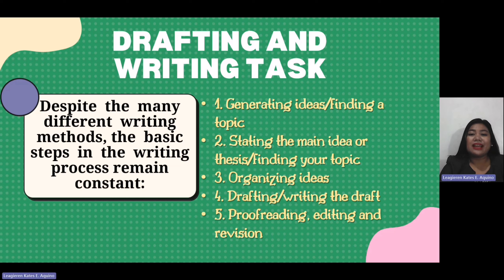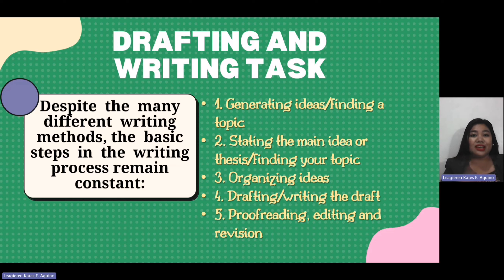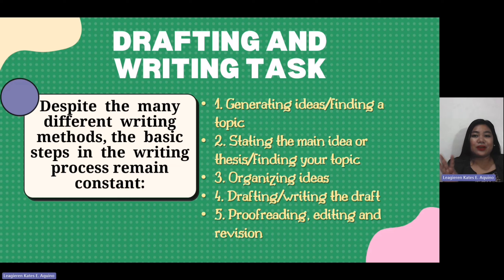Despite the many different writing methods, there are basic steps in the writing process that remain constant. Here are the following: First, generating ideas or finding a topic. Second, stating the main idea or the thesis statement. Third, organizing your ideas. Fourth, drafting or writing a draft. And lastly, number five, proofreading, editing, or revision.